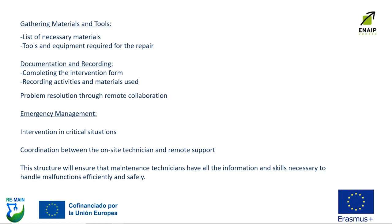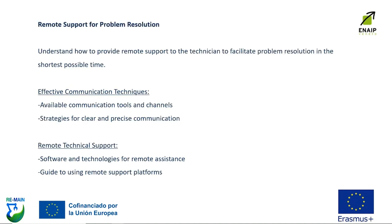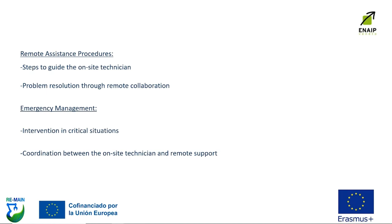The structure will ensure that maintenance technicians have all the information and skills necessary to handle malfunctions efficiently and safely. As for the third learning outcome — remote support for problem resolution — this covers effective communication techniques and available tools and channels, setting up remote technical support software and technologies, starting remote assistance procedures with steps to guide the on-site technician through remote collaboration, and emergency management including how to coordinate between the on-site technician and remote support.